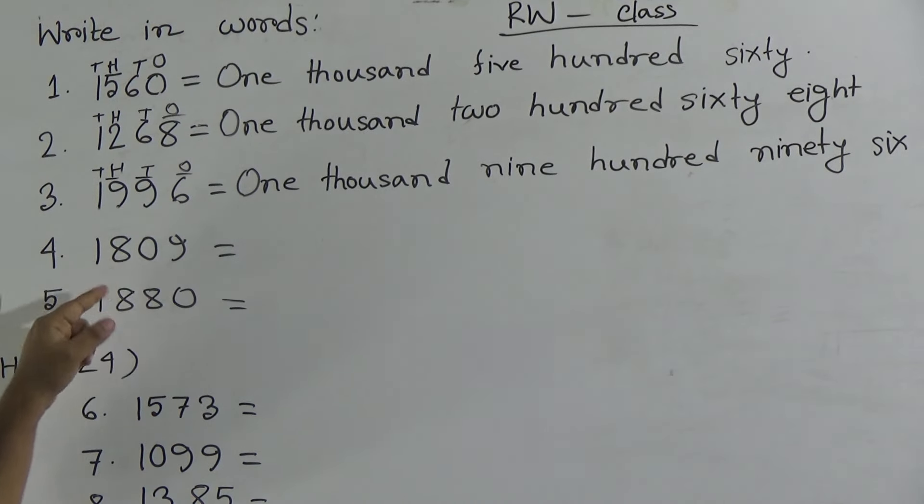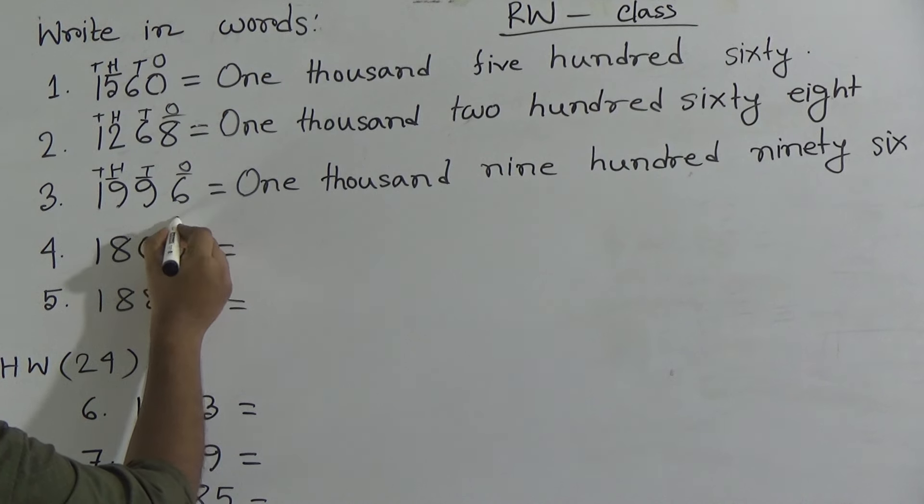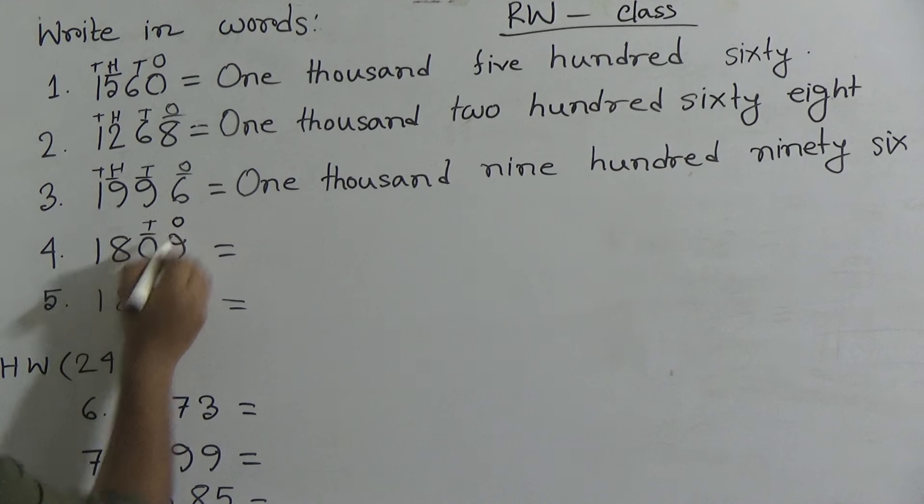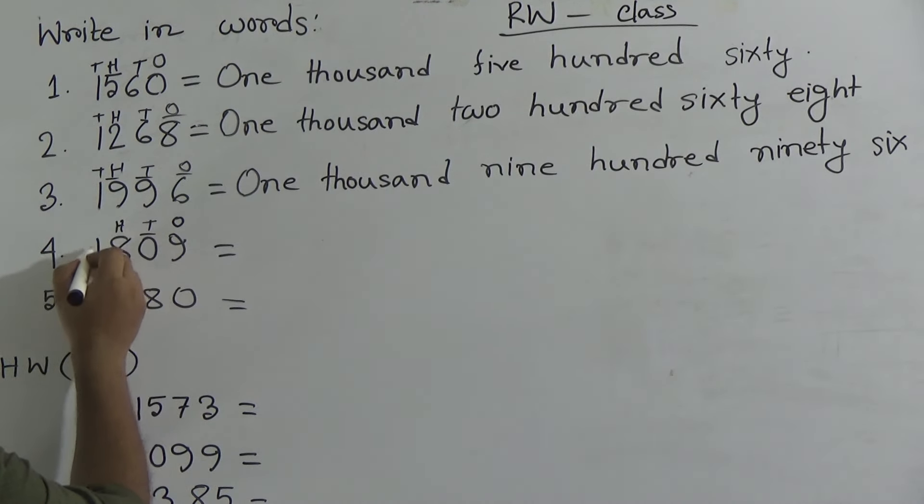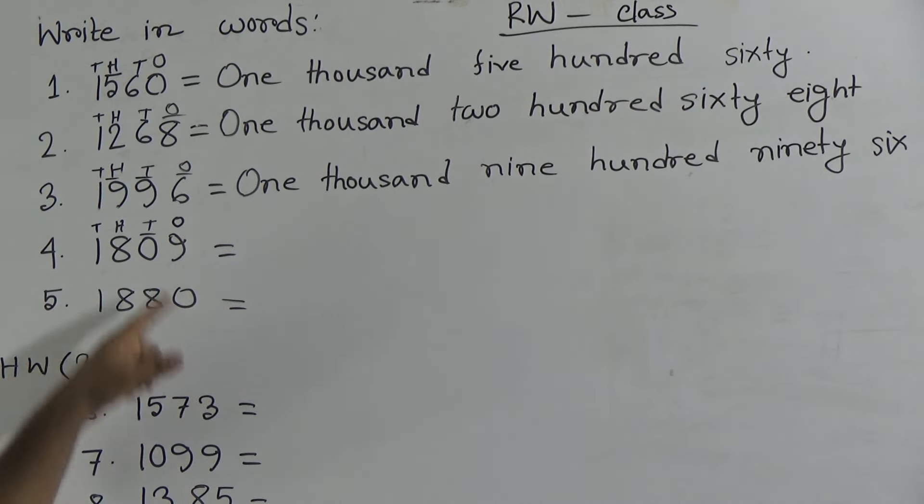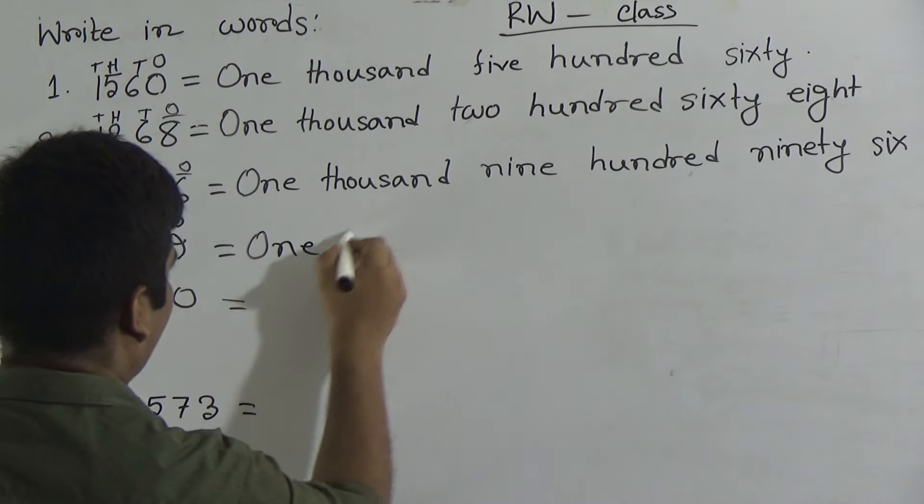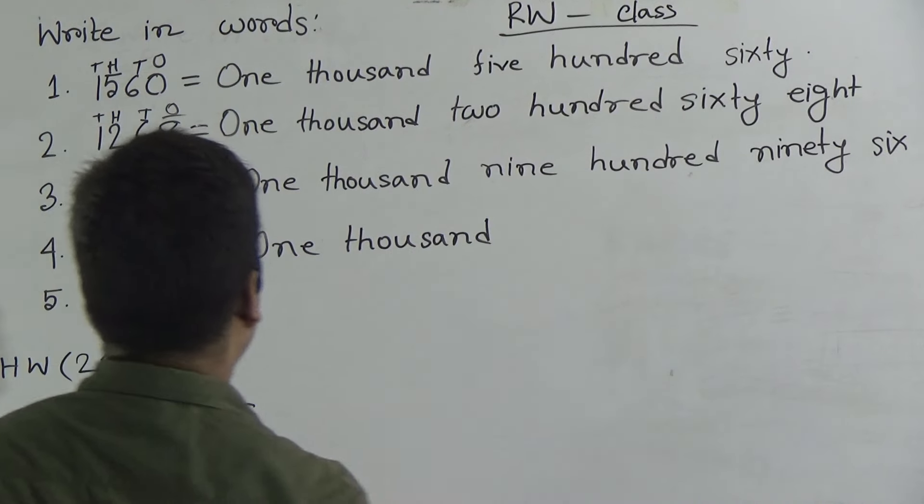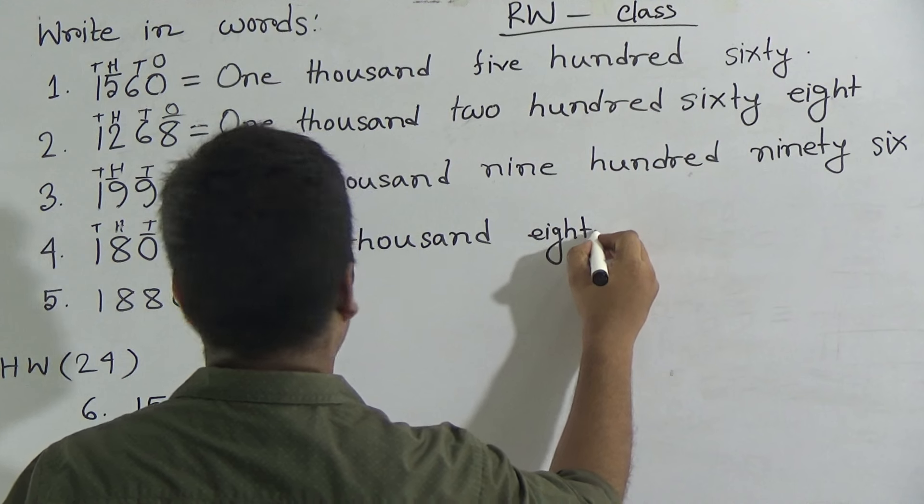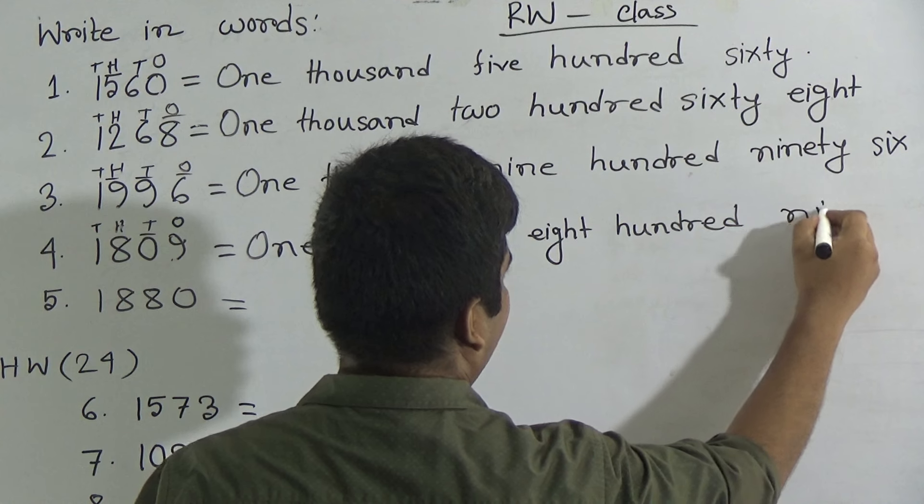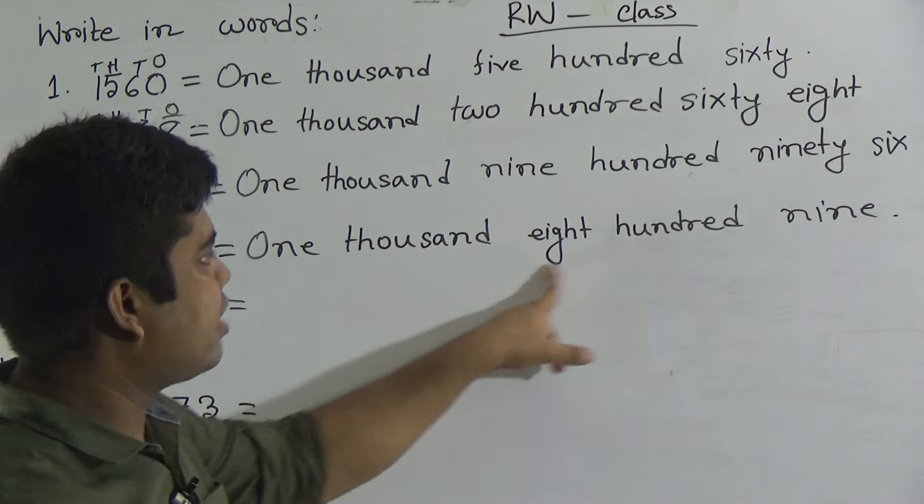Next one 1809. First of all we write the place name: 9 is in ones place, 0 is in tens place, 8 is in 100 place and 1 is in 1000 place. Dear students notice here tens place is absent so we do not write the tens place. This is read as 1809. So write 1 O-N-E, 1000 T-H-O-U-S-A-N-D, 800 E-I-G-H-T 800 H-U-N-D-R-E-D, 809.